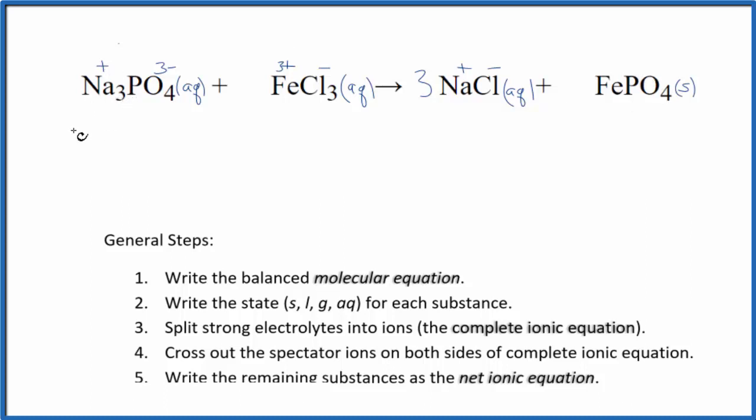So we have 3 sodium ions, and I'll write aqueous at the end. Let's not do that now. Plus the phosphate ion, just one of those. Plus 1 iron(III) ion. And then we have 3 chloride ions. And those are the reactants in our net ionic equation.